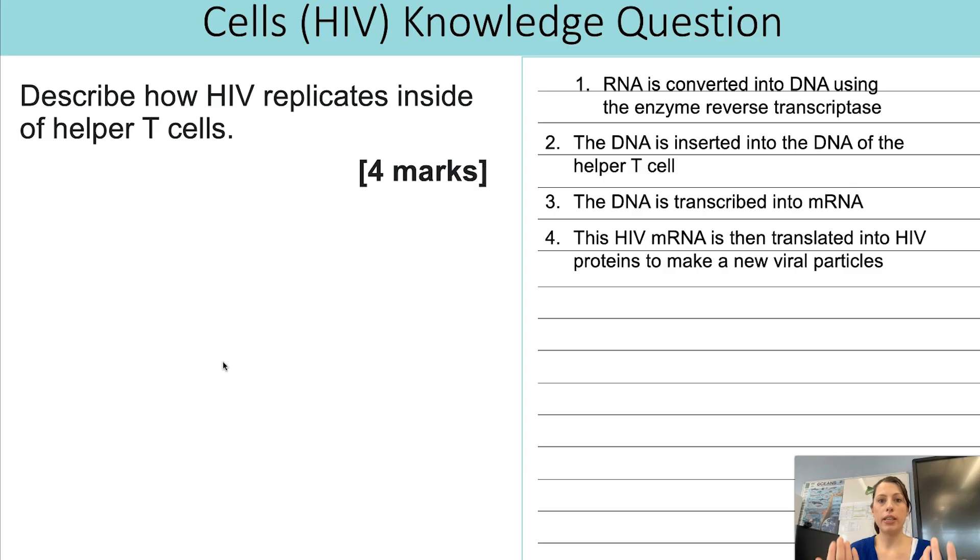So it will be transcribed into mRNA and then this is now where we get to the point of how it's going to replicate to make a new virus particle. So that HIV mRNA is then translated into the proteins that HIV requires to make its new particle and that's what mark number four is. So that's what I'd be putting as those four key bullet points.